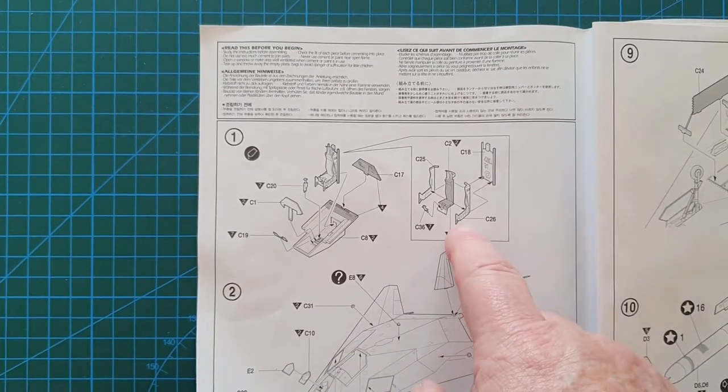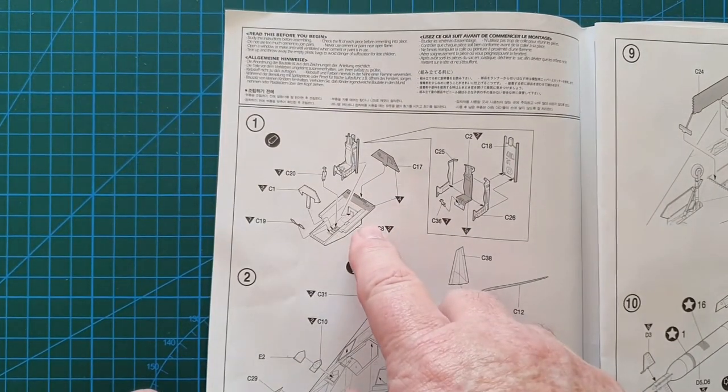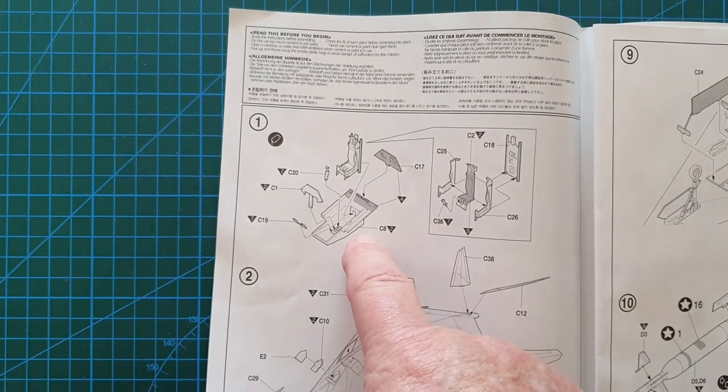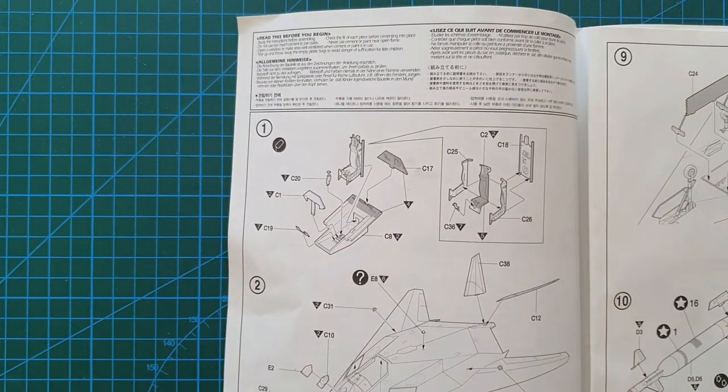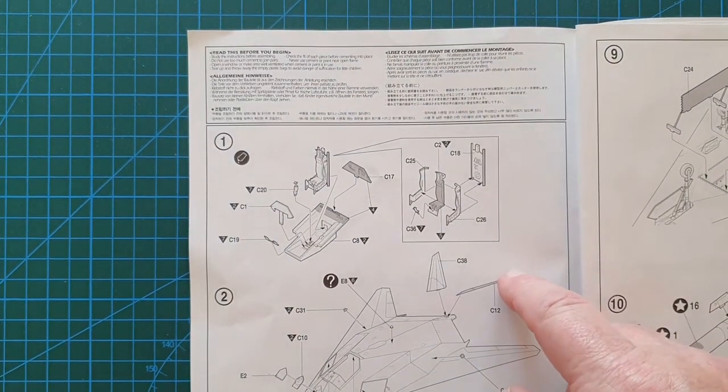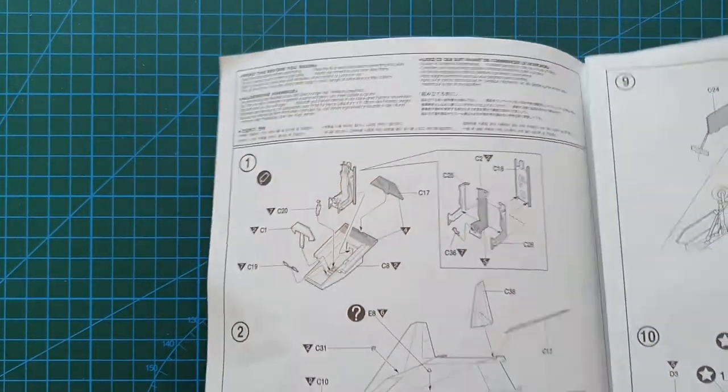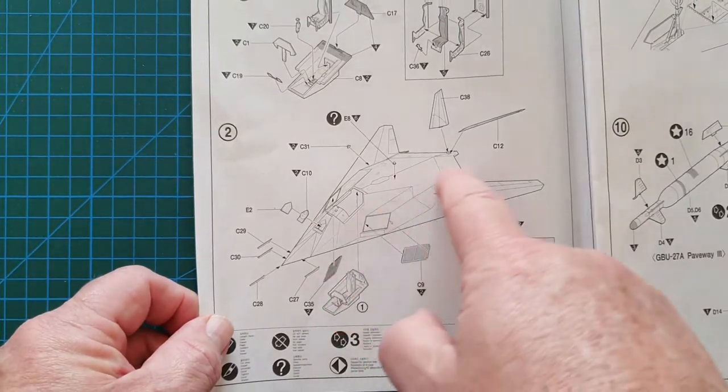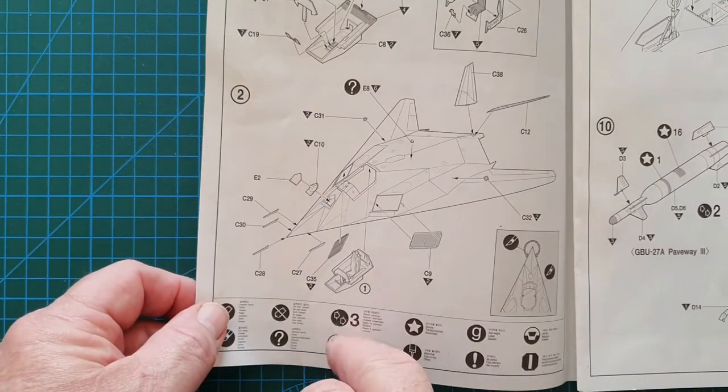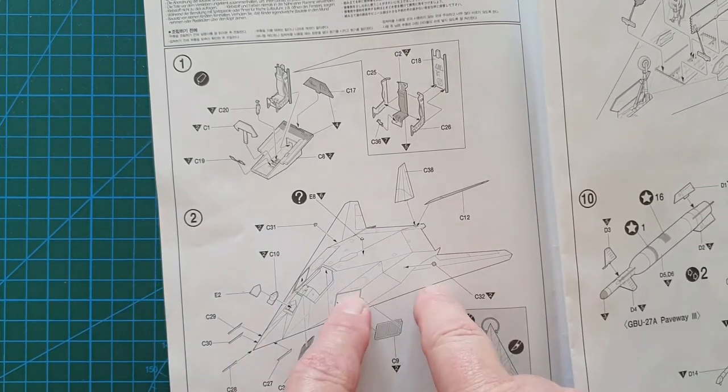You've got your cockpit tub going together, your ejector seat. There are no decals for the cockpit, so it'll be interesting to see how they've rendered the instruments. You could of course go for an aftermarket Eduard set. I have ordered a Tamiya set for this cockpit and I'll just adapt it. Then you've got your fuselage, tails, and engine intakes, the cockpit tub going up.